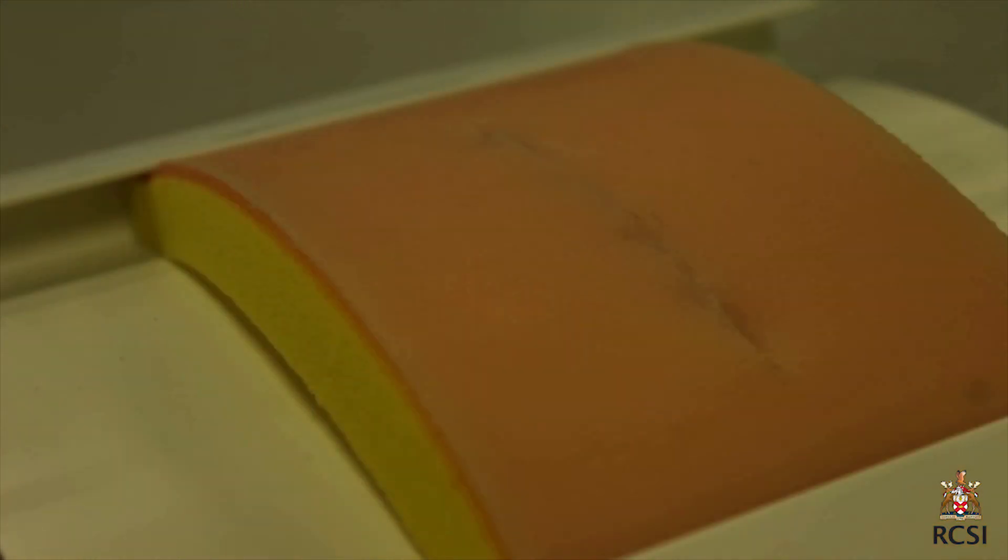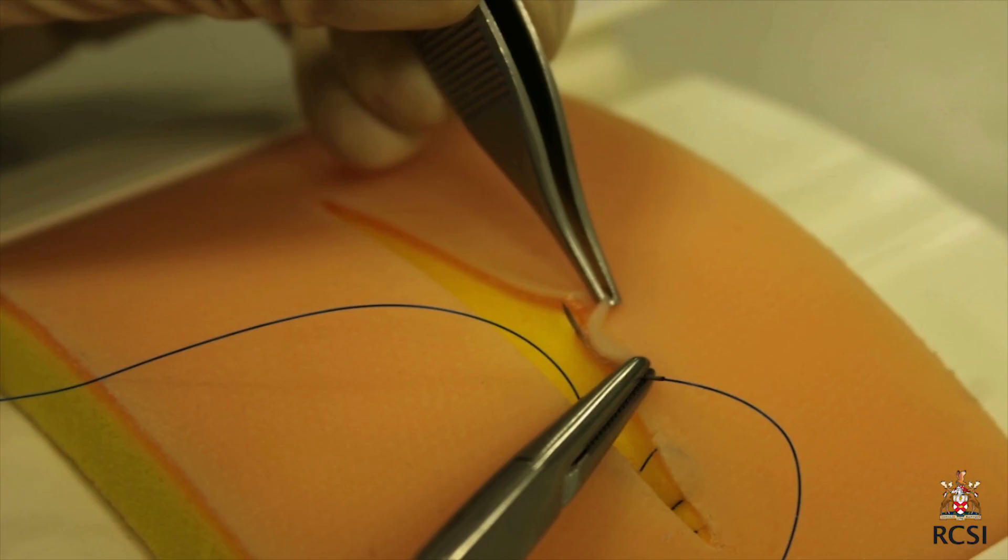There are other methods of securing both ends of a subcuticular suture. Often undyed absorbable material is used. Although sturdy strips may be applied over a subcuticular suture, the inherent strength of the closure is in the stitch itself.